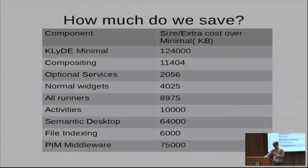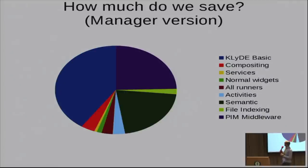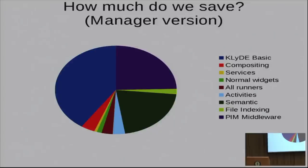Here's the manager version: a pie chart. This segment in medium blue is what you can get down to with the basic cutdown without turning off everything. If you add compositing and normal widgets back, it comes up to the green segment. Nearly more than 50% of the default consumption can be disabled if you want to do so.